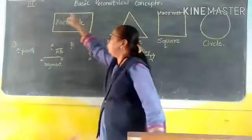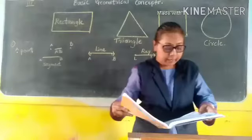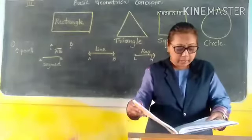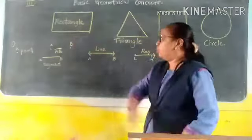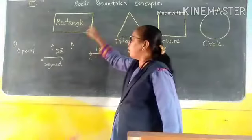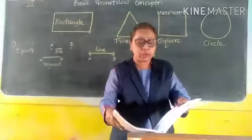And vertices. One, two, three, four. Four vertices. And the opposite sides of the rectangle are equal. Write the word opposite there.